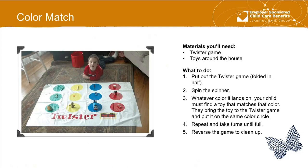Color match Twister: you'll need a Twister game and toys from around the house. Twister games are easy to find at Salvation Army. Put out the Twister game, fold it in half so there are fewer dots. Spin the spinner, and whatever color it lands on, your child has to go find a toy that matches that color, bring it back, and put it on the matching colored circle. Repeat until the circles are full or as long as you want to play. To clean up, just reverse it — spin it, pick something off the board that matches the color, and put it away.